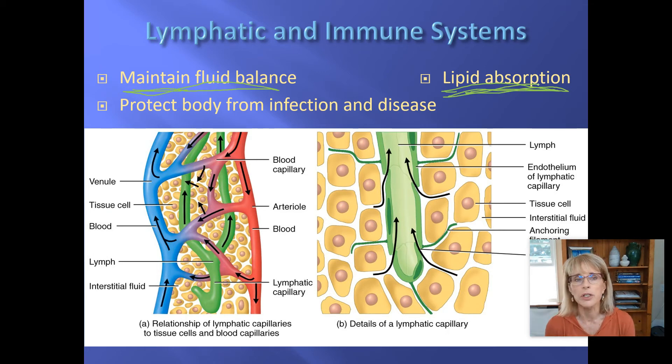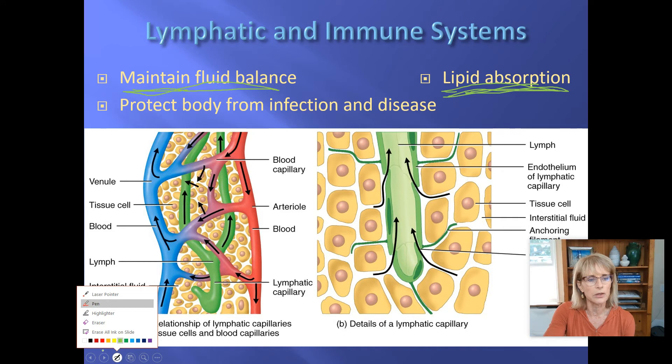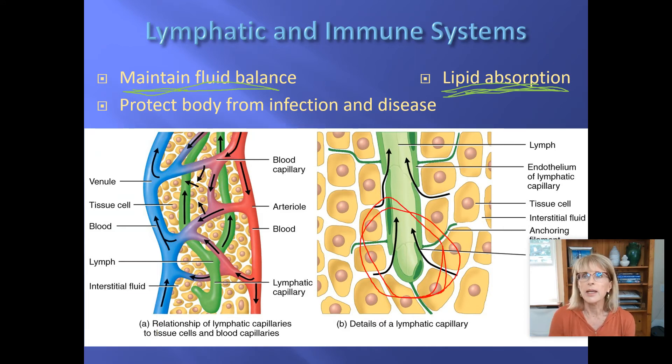When we get to the digestive system, you will learn that lipid absorption is another function of the lymphatic system. There are little dead-end tubes in all of your intestinal tract, and those little dead-end tubes are gathering up all of the fat that you have digested from your meal, and they are also taking that back towards the heart.